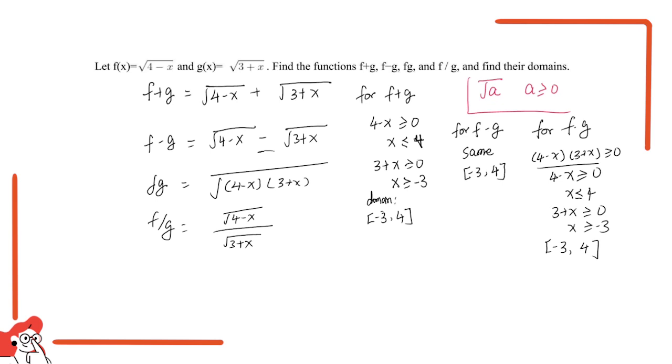And for the last one, f over g, we have first of all the same range. x still has to be smaller than 4.